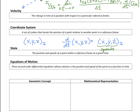Our last foundational concept is the equation of motion. Equations of motion in three-dimensional Euclidean space consist of three second-order differential equations whose solution is the position and speed of the point as a function of time. Dynamics are inseparable from differential equations — specifically, second-order ordinary differential equations. We base these on the laws of mechanics, such as Newton's second law, F equals mA. Remember F is a vector, mass is a scalar, and acceleration is a vector dependent on the reference frame. We use these laws to obtain our equations of motion, which we solve to find the state.